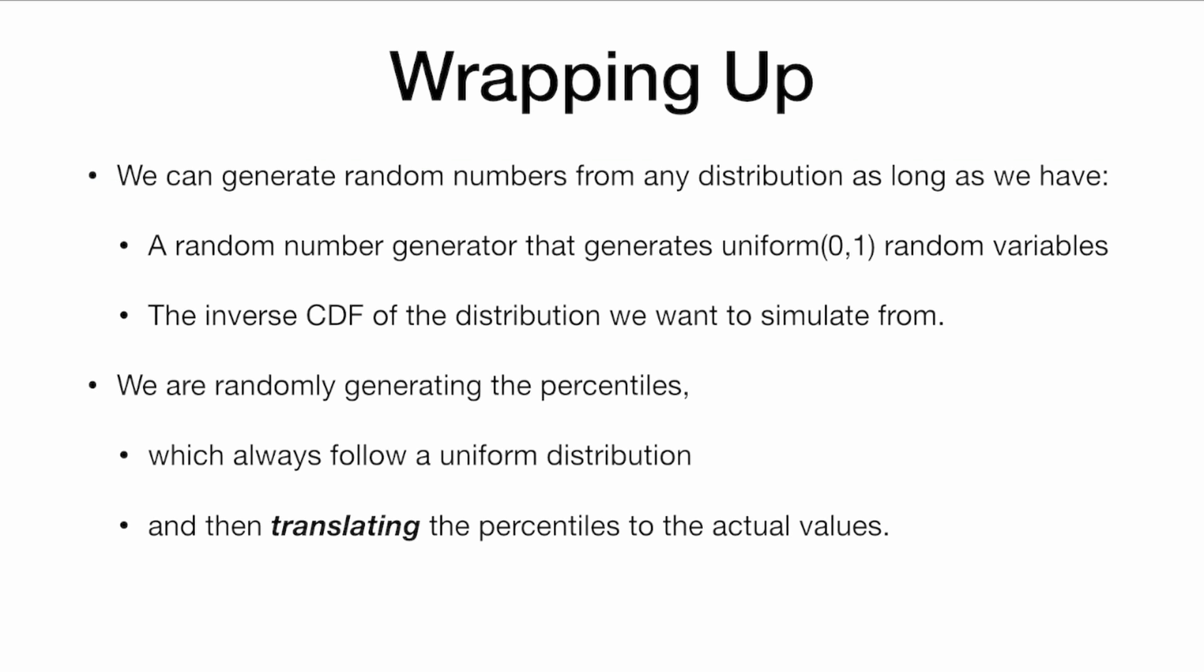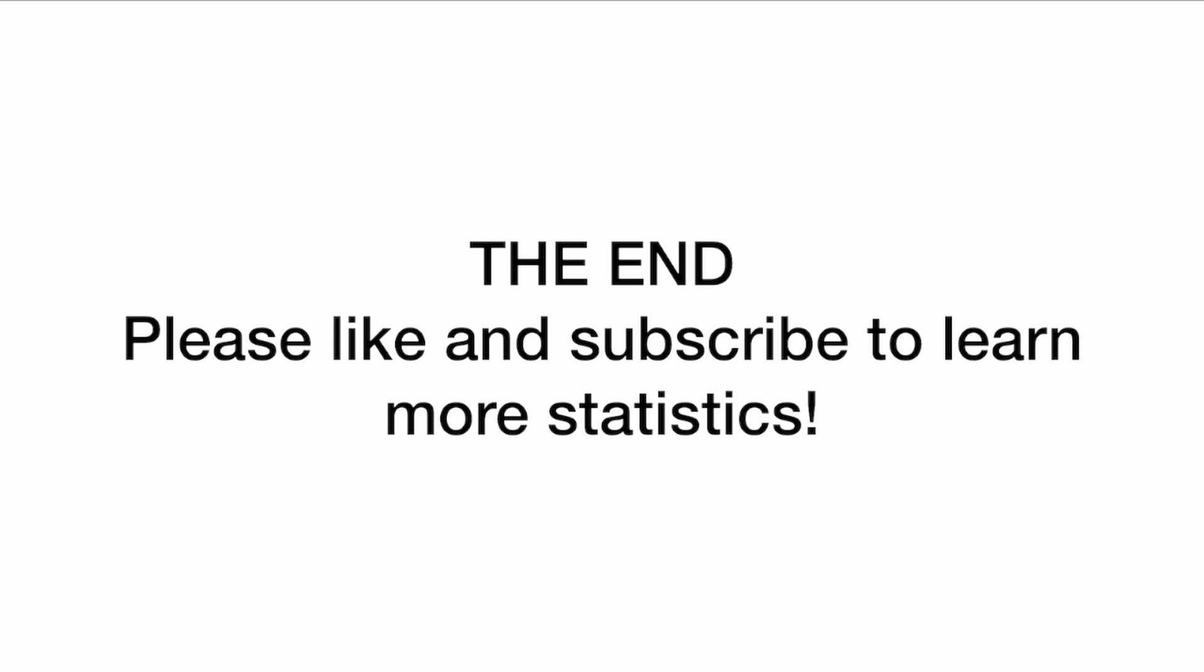So wrapping up, we can generate random numbers from any distribution, as long as we have a random number generator that generates uniform 0, 1 random variables, and the inverse CDF of the distribution we want to simulate from. What we are doing is we are randomly generating the percentiles, which always follow a uniform distribution, and then we are translating the percentiles to the actual values. That's the end. Please like and subscribe to learn more statistics.